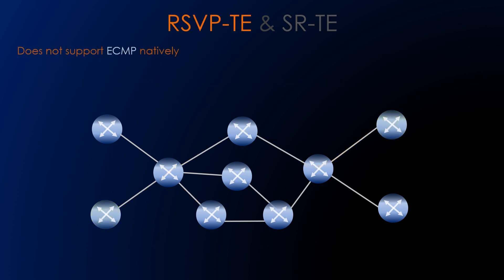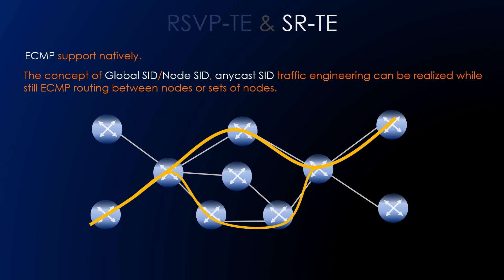In RSVP, ECMP is not supported natively. With traditional MPLS traffic engineering, the ability to perform MPLS-ECMP routing is very limited. Segment routing offers ECMP routing capabilities in non-traffic-engineering domains similar to current LDP. With the concept of global SID — node SID or anycast SID — traffic engineering can be realized while still enabling ECMP routing between nodes or a set of nodes. This provides the capability to load balance across the label-switched network between nodes or to a set of nodes.